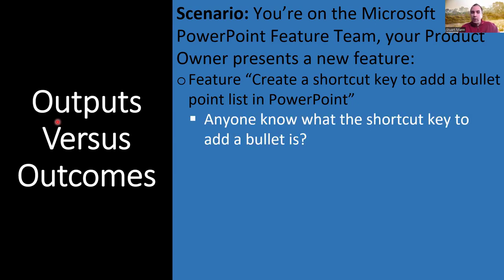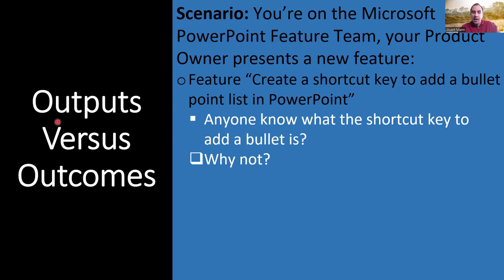When I've asked this in live sessions, it's incredibly rare that anyone knows what the shortcut key is — in fact I don't think anyone's ever known. They eventually did add one: it's Ctrl+Shift+L — very hard to remember. I assume the L is because of the two L's in 'bullet.' You've got better things to store in your brain than Ctrl+Shift+L, which is why none of us probably use it or even knew it was there.